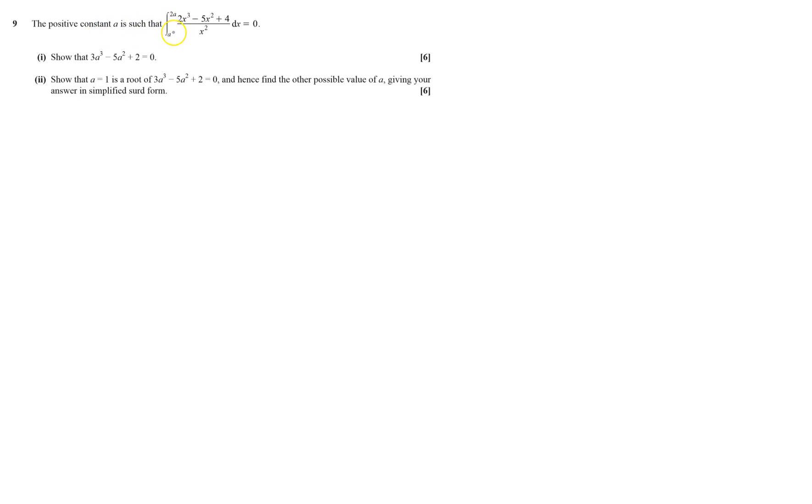Okay, so positive constant a between these two equals zero. Show that I've got to do that. So I've got to basically solve this, get an equation in a. So I need to integrate that. But I can't integrate it quite immediately, so I need to change it so I can integrate it nicely.